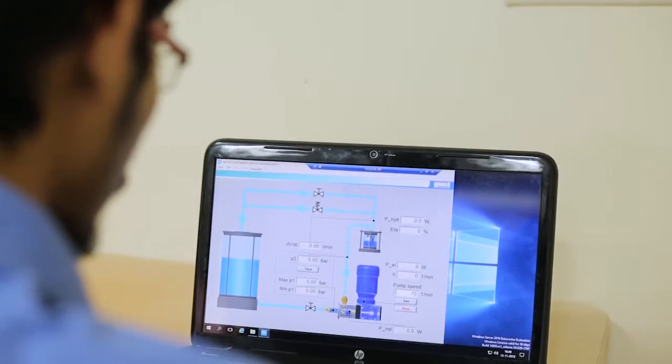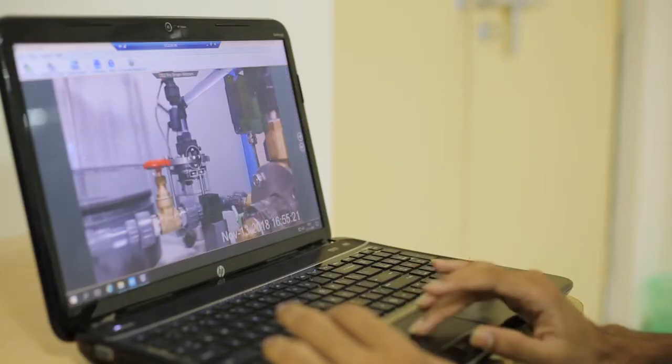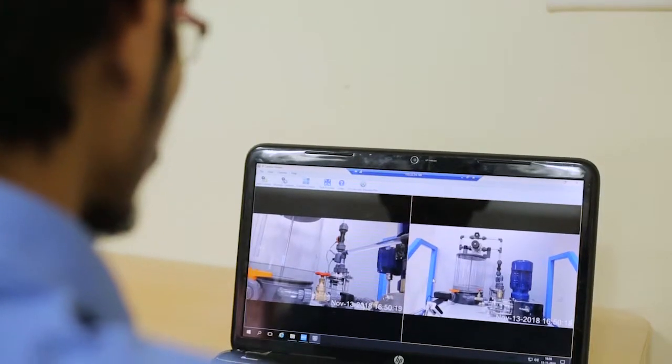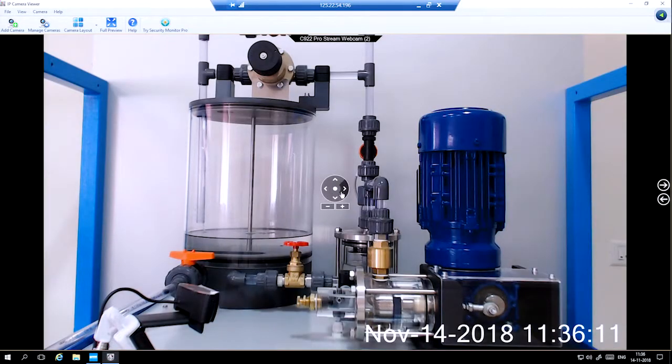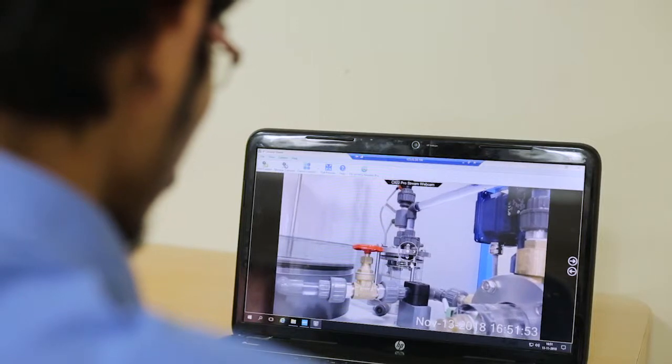Students can control the machines using the equipment console while watching them through multiple cameras installed around the lab. They can pan, tilt, or zoom to have a better view of the machines.